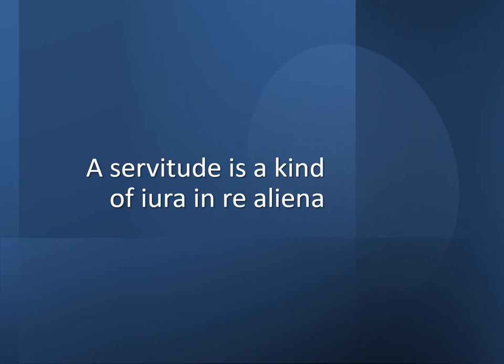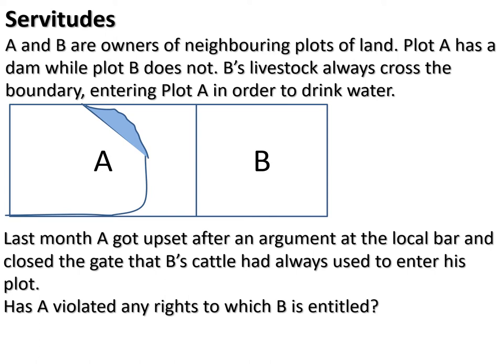A servitude is a kind of right in the property of another. The law extends the protection of rights of non-owners in the property of owners, to the point of placing restrictions on the rights of legitimate owners. Imagine two plots — plot A and plot B — owners of neighboring plots sharing contiguous territory. Plot A has a dam while plot B does not.